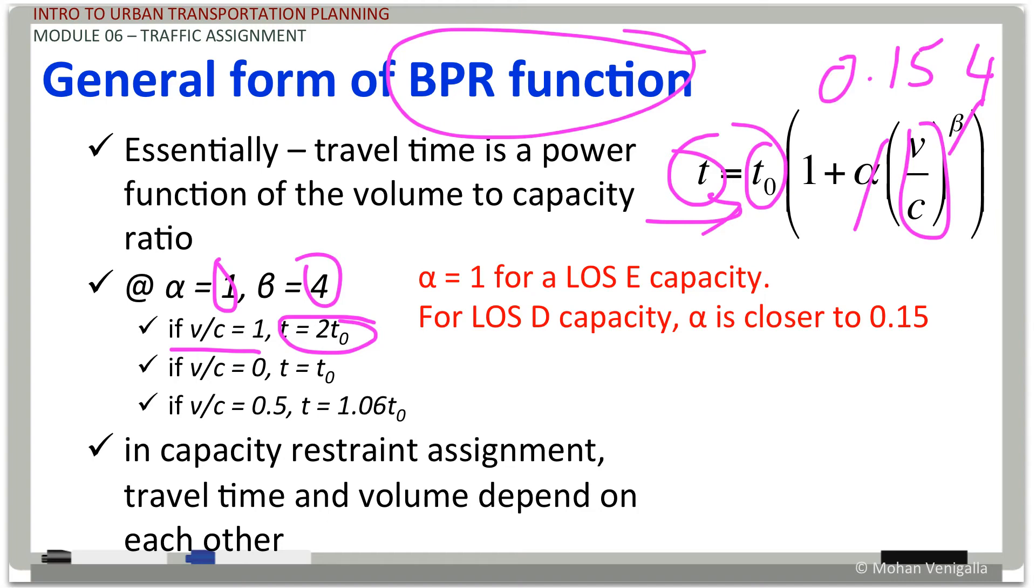If the volume capacity ratio is 0, that means there is no traffic on the highway. Your travel time is nothing but free flow travel time, which is T0. And if you're exactly at half that volume capacity ratio, travel time barely changes, only 6% higher than T sub 0.